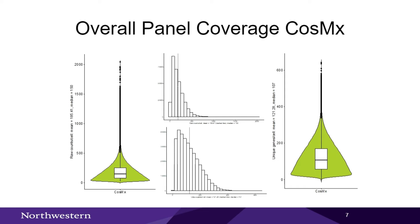Looking at CosMx overall panel coverage, the mean transcripts per cell in our dataset averaged about 150, with a median of about 150, though there is some skewness and some FOVs get up into the thousands. For unique genes per cell, there is a mean of about 120 and a median of about 107 — again some skewness in the data, but good diversity in representation with strong counts per cell and unique genes per cell.